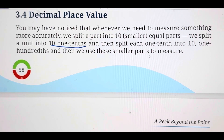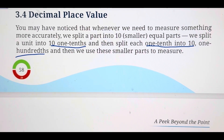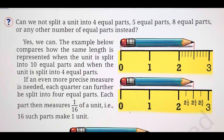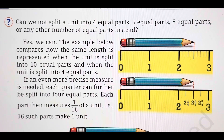And then, if we want further smaller parts, we split that 1 tenth into 10 parts, which becomes 1/100. Now, if we want still smaller parts — can we not split a unit into 4 equal parts, 5 equal parts, 8 equal parts, or any other number? Why only 10 or multiples of 10?